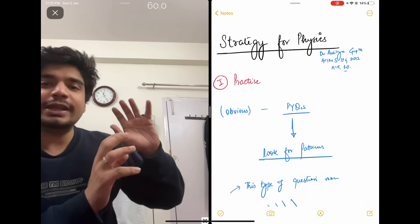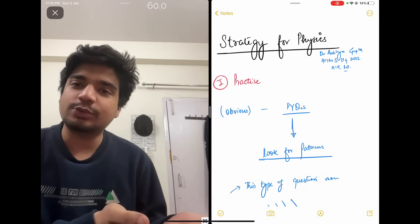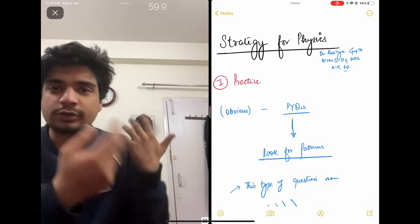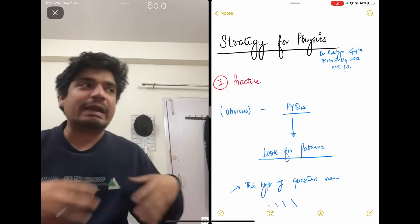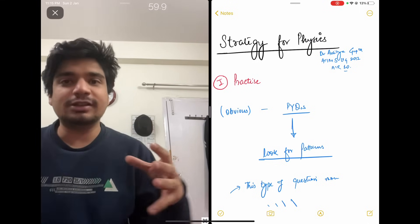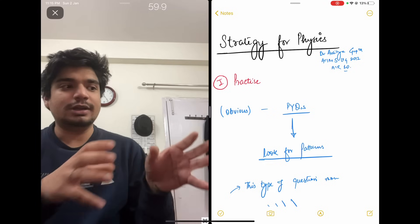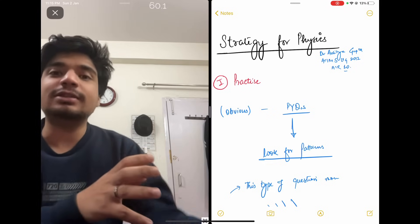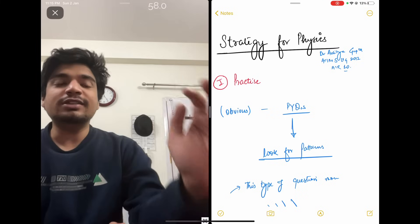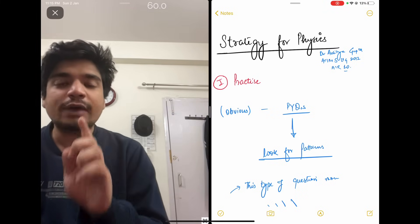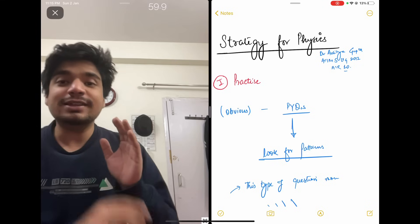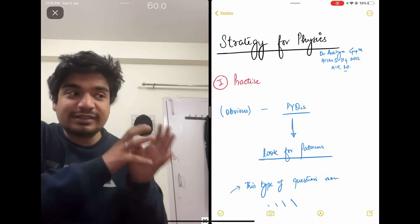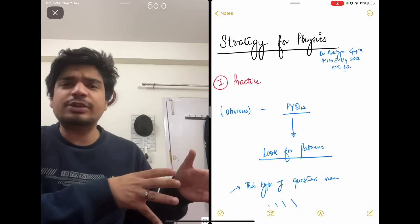The concept is one thing. F is equal to GMM by R square. Newton has written one line. The problem is that when you apply it to different types of numericals, you'll understand that this formula is applied in this numerical in this way. And you have to look for patterns. The importance of doing previous year questions is you'll realize that there are certain types of concepts.